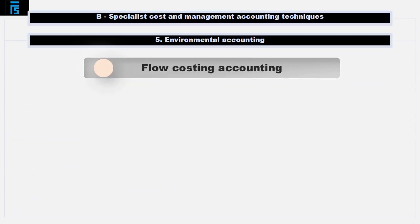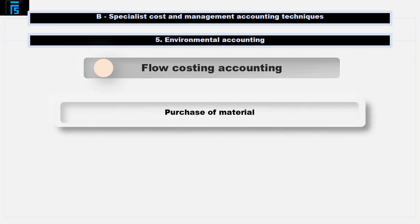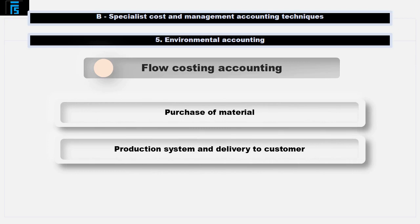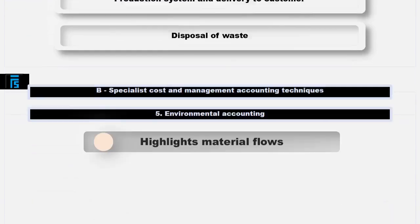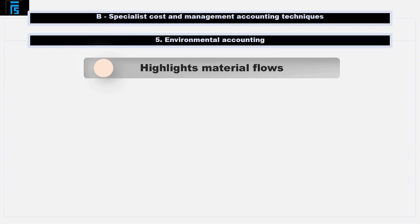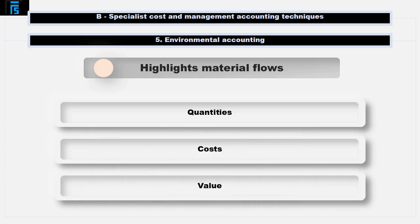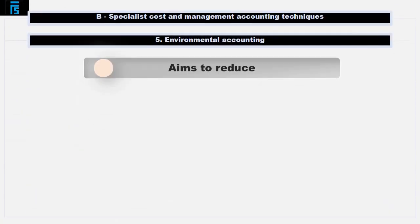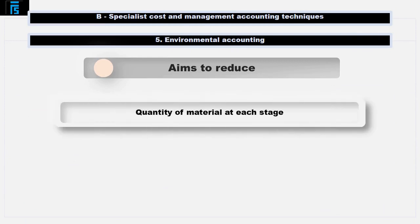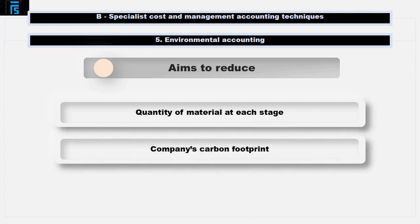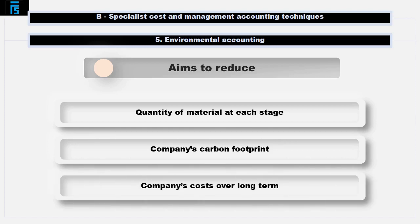Flow Cost Accounting monitors the flow of material through a business in three categories of its organisational structure: the purchase of material, the production system and delivery to the customer, and disposal of waste. Flow Cost Accounting highlights material flows by examining the physical quantities involved, their costs and their value at each stage of the organisation. It aims to reduce the quantity of material at each stage, which should reduce the company's carbon footprint and also reduce the company's costs over the long term.